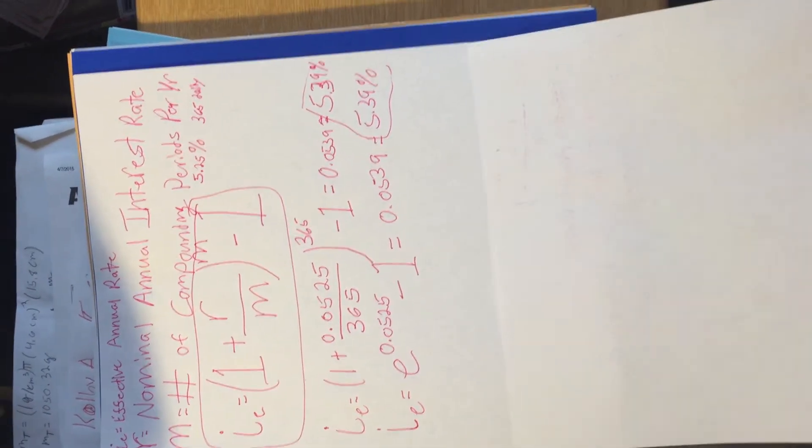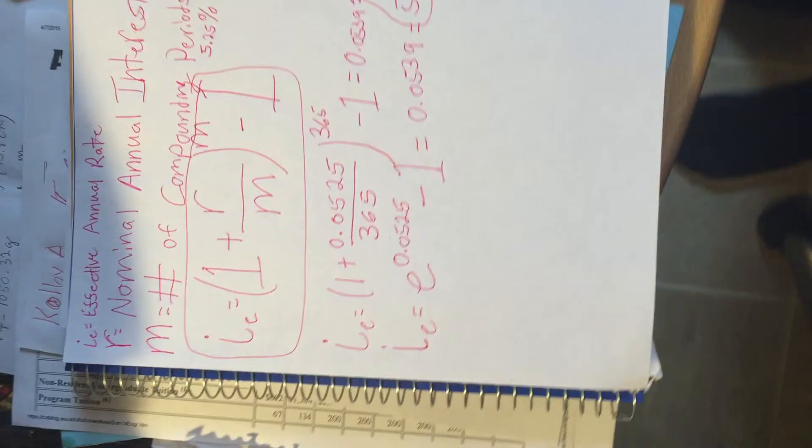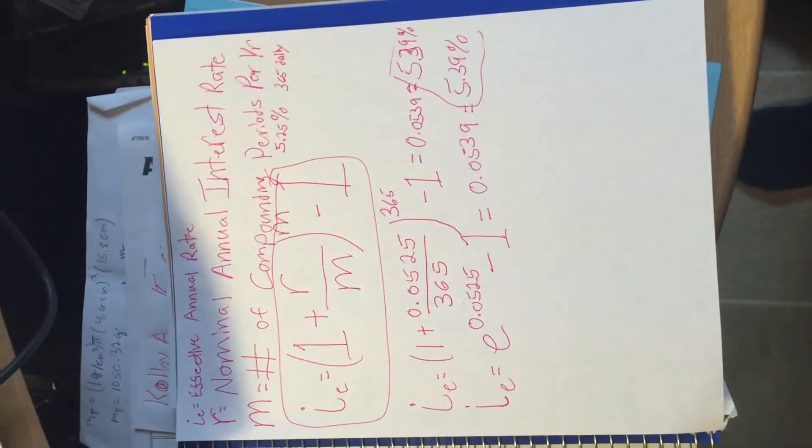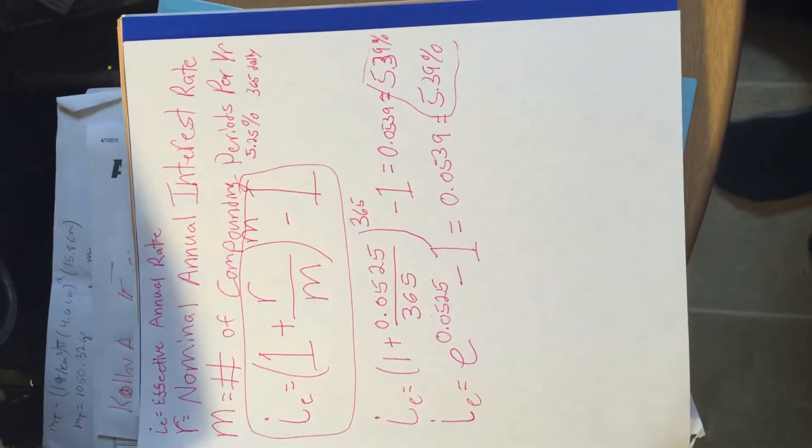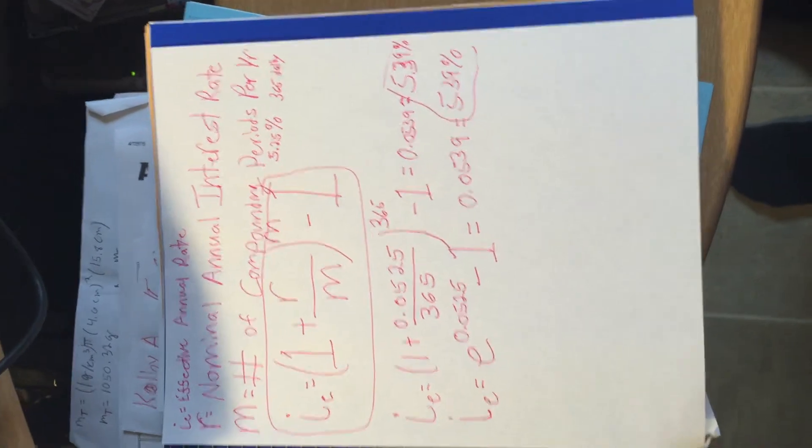We got 5.39%, so they are the same. And that's because these formulas are pretty much finding the same thing. It's just you have different ways of writing a formula.